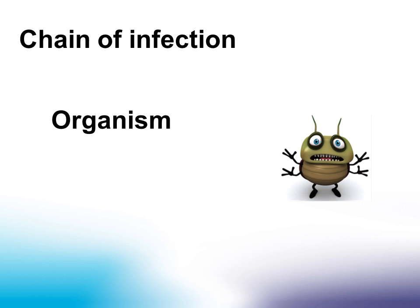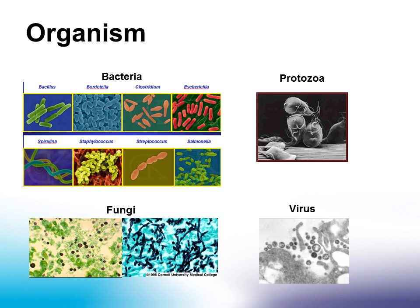First, we will look at the role of the organism in the chain of infection. Organisms are too small to be seen with the naked eye. There are different types of organisms including bacteria, fungi, protozoa, and viruses.